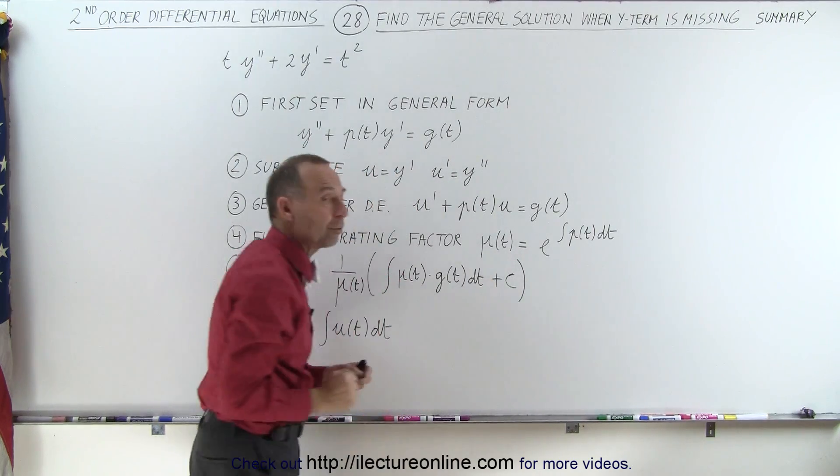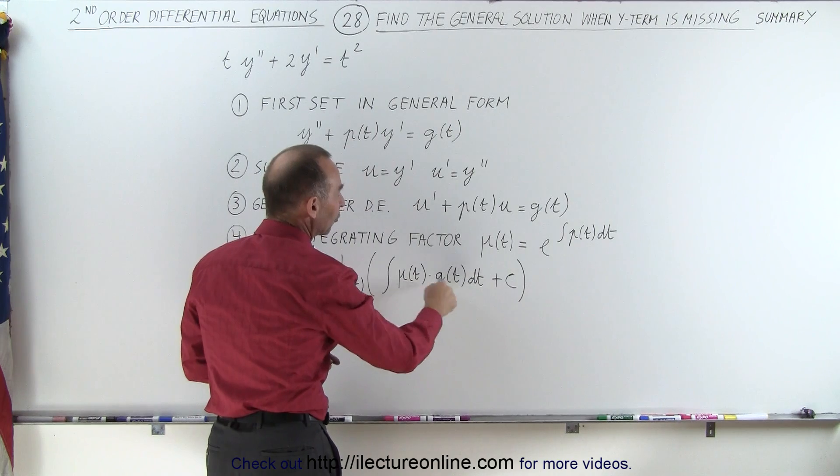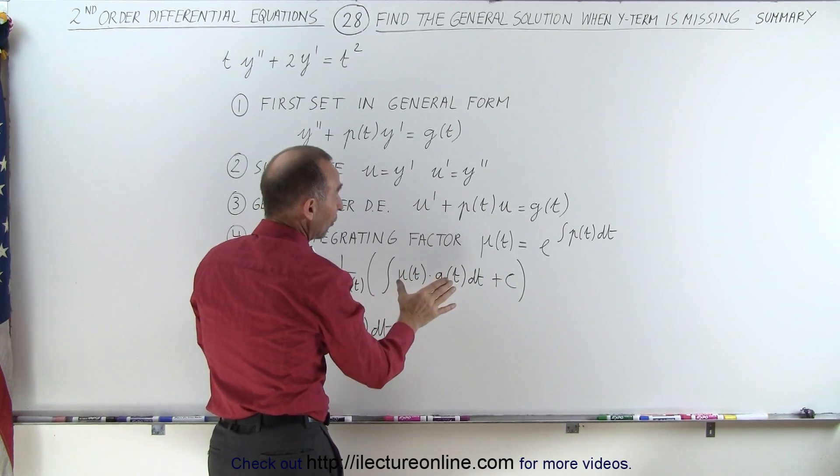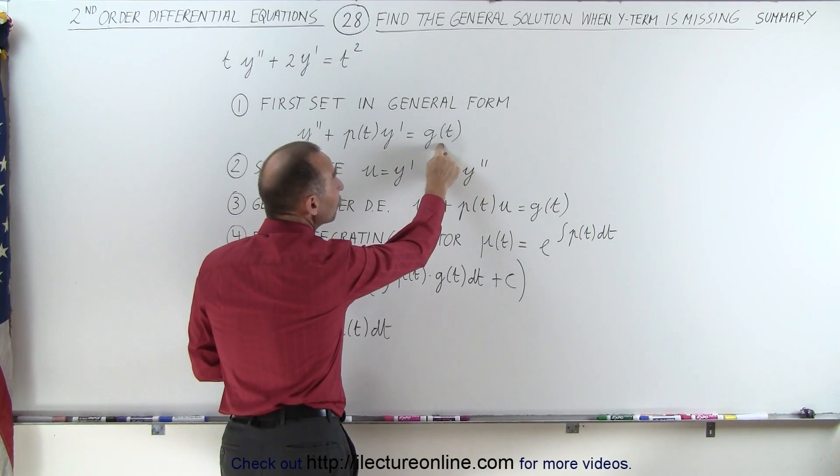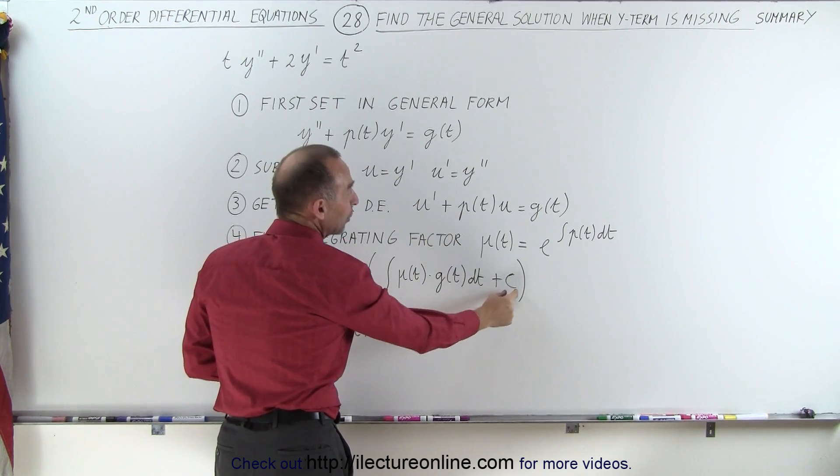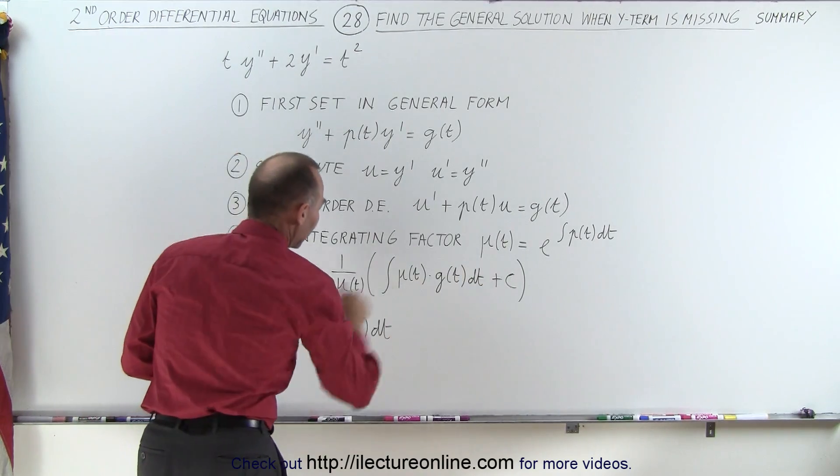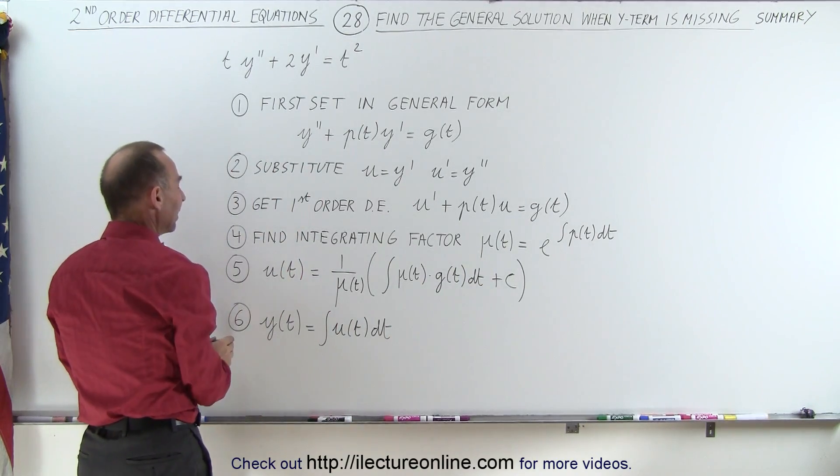If we have constant coefficients, this term typically goes to zero, or I should say constant coefficients. And if it's a homogeneous equation, if g of t is equal to zero, then this goes to zero, and we only have the constant for the integral. So the integrating constant, as we call it.